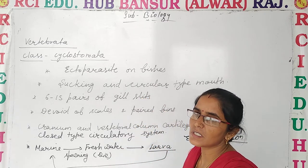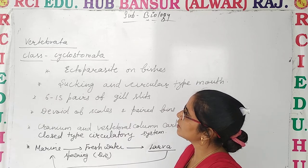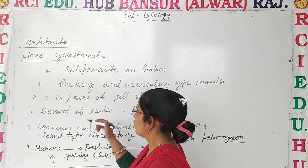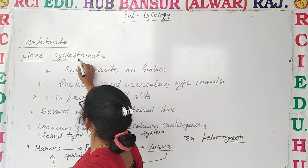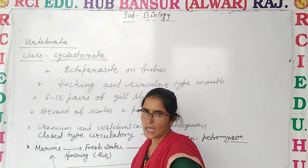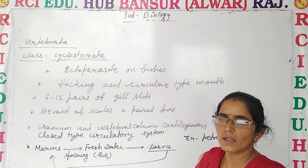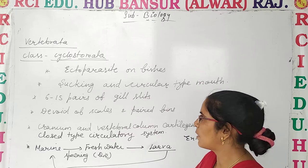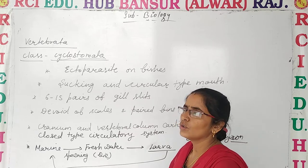As the name suggests, Cyclostomata — it means circular opening. Cyclo means circular and stomata means opening. So you can say that the mouth is circular and sucking type. Is that clear?